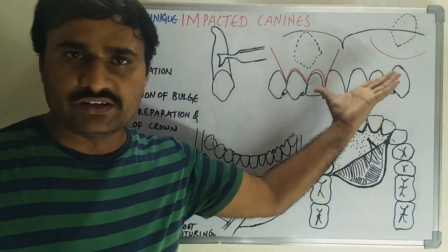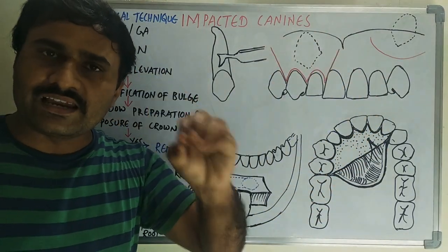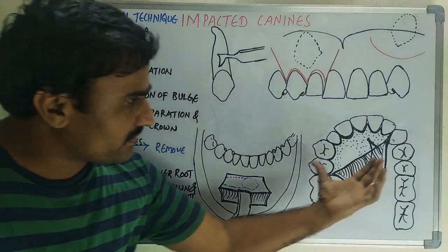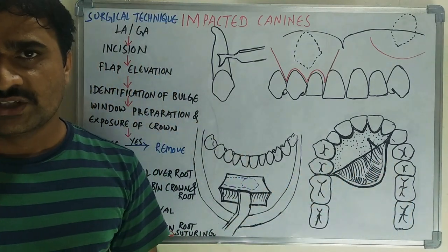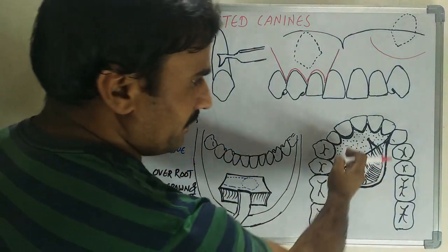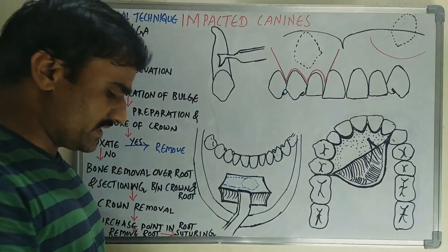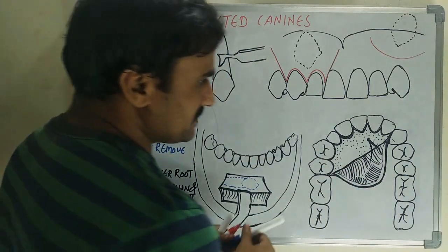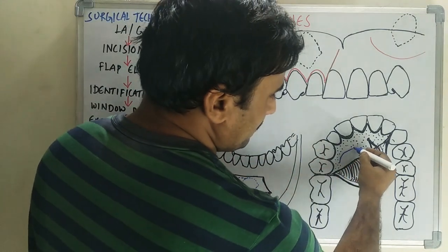This is the incision design when the maxillary canine is located on the palatal side. For example, if it is located on the right side of the palate, the approach is directed toward the maxillary canine crown on the palatal aspect.